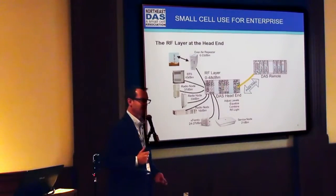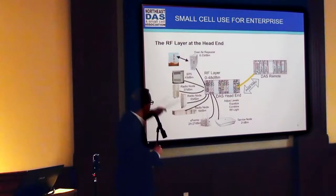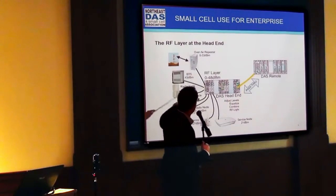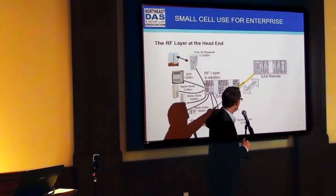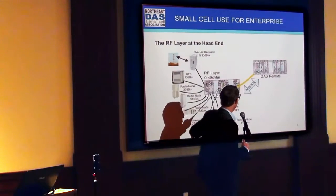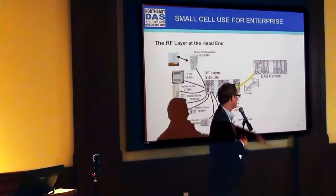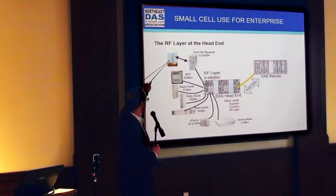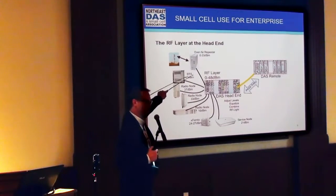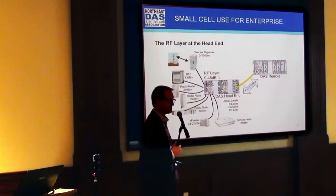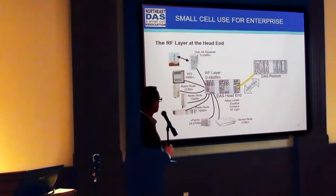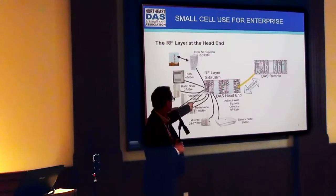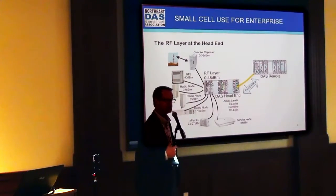So you've got the RF layer at the head end. You've got your head end for your DAS, you've got fiber — that's a pass-through. Whatever you put into the head end is going to go through the remote and then out to the antennas. If you look at the RF layer, you've got your cell site. Some of the older systems have welfare repeaters — you bring them in from the roof. Zero to 33 dBm, let's say, comes out of there and goes into your point of interface and your DAS.